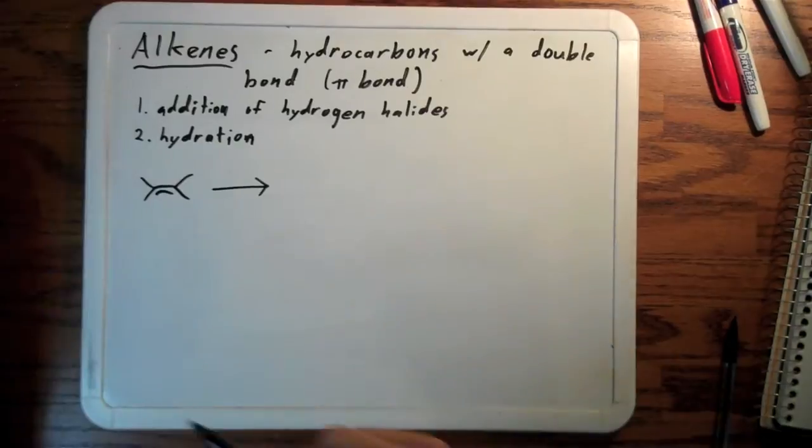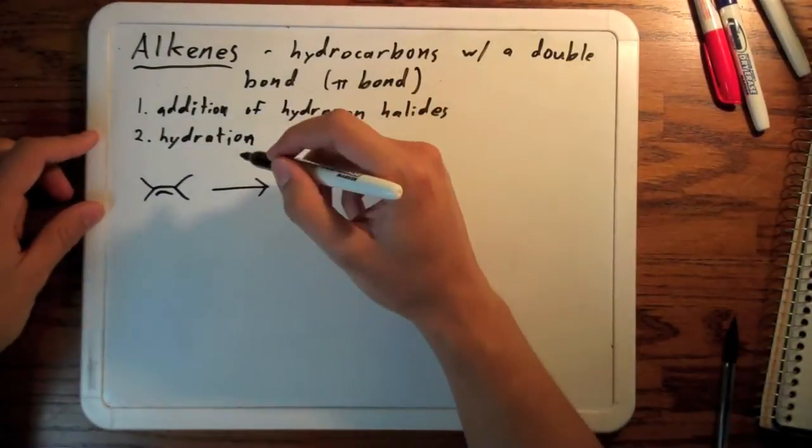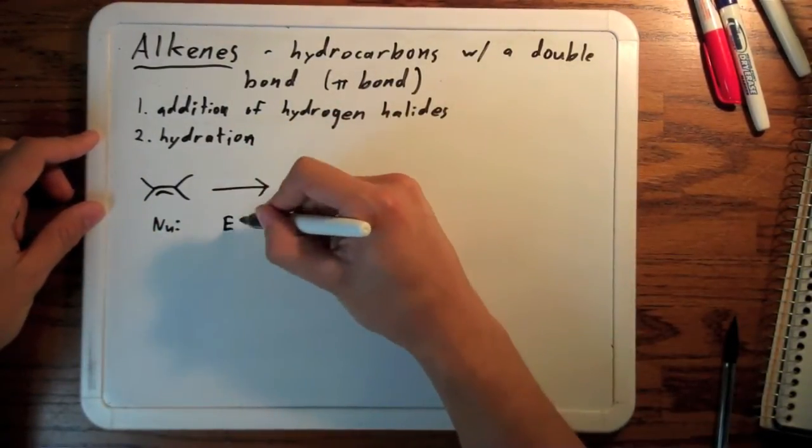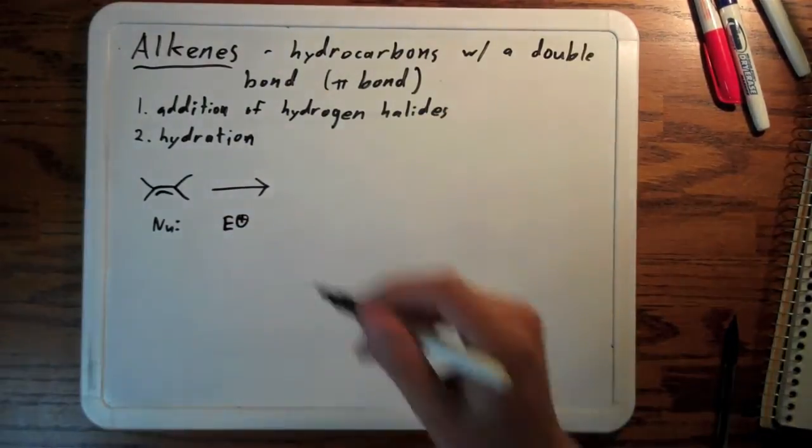How do we do that? Well, same way as always. Play around with the electrons. Our alkene is a nucleophile, like we said. We'll need an electrophile to get this thing going.